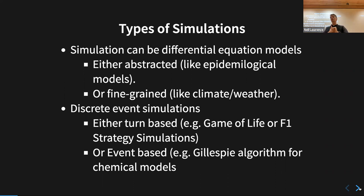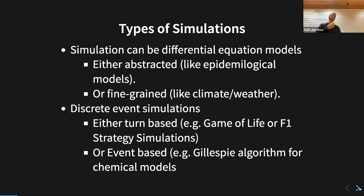Differential equation simulations can be quite fine-grained, like in climate or weather. Other simulations we haven't talked about as much are discrete event simulations. The Game of Life is a discrete event setup where time is discrete and things are updated each turn. Formula One strategy simulations are also discrete event, where each lap is a discrete event and you calculate what happened with assumptions about overtaking.